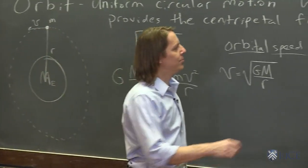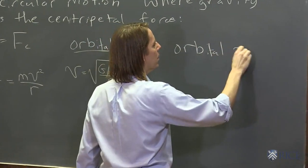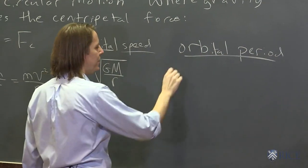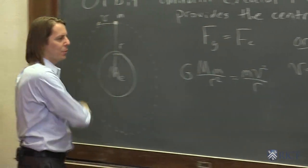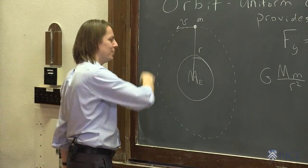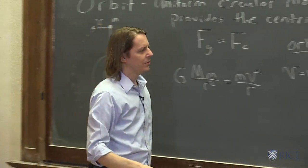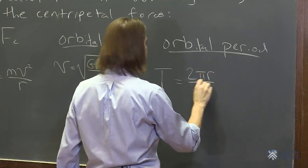And then of course you can also ask about the period. That's the other common factor that people want to think about. The orbital period T, you can always get the period if you know how fast the thing's going around. Right? The time it takes to go around is simply 2 pi R, the circumference divided by the speed. So it's 2 pi R divided by V.